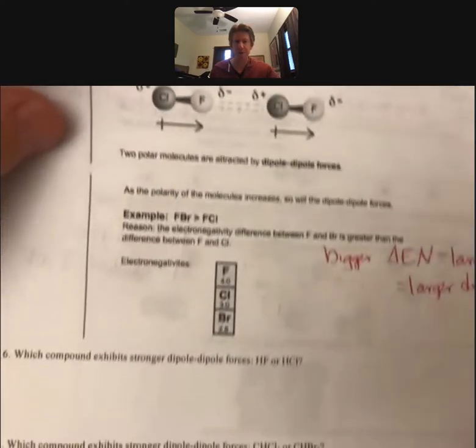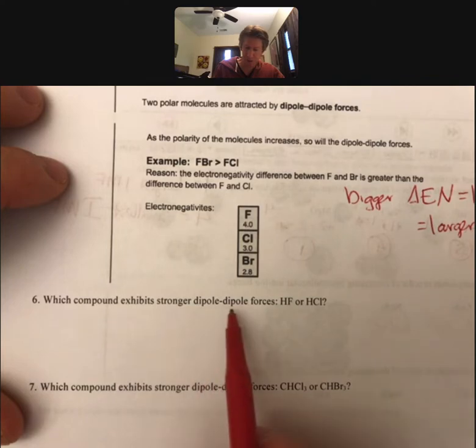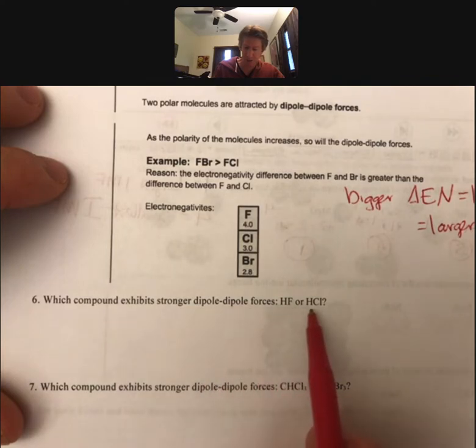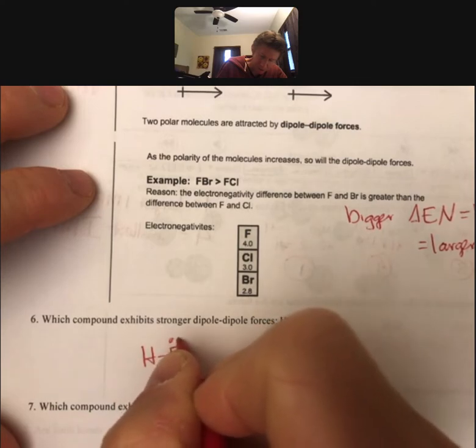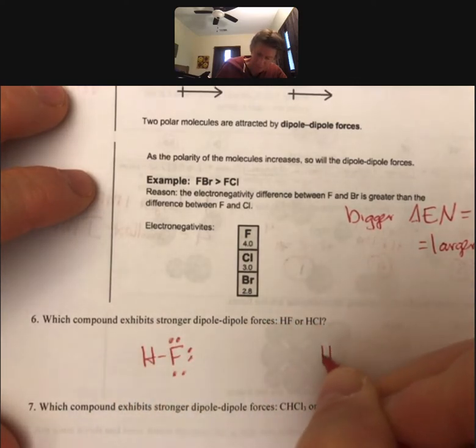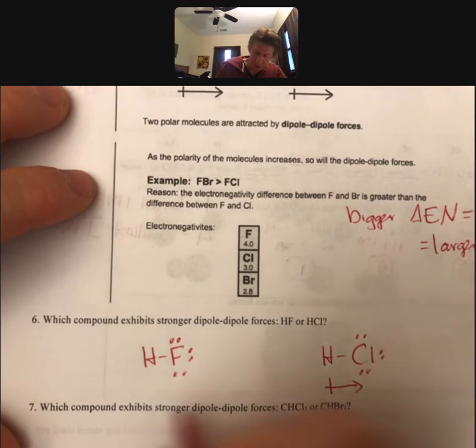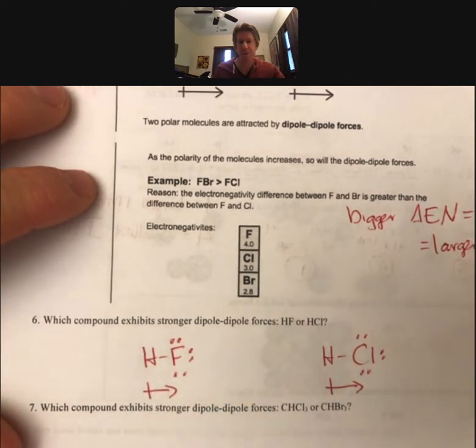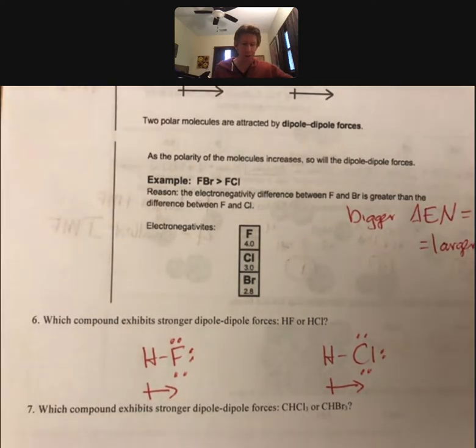So on this page we have two examples. We have which compound exhibits stronger dipole-dipole forces, HF or HCl. We can draw the Lewis structures for these. We can draw dipoles, one for each bond. Remember, we only draw them for bonds in this course. And then we look at our periodic table.